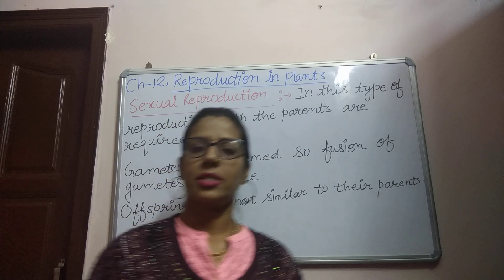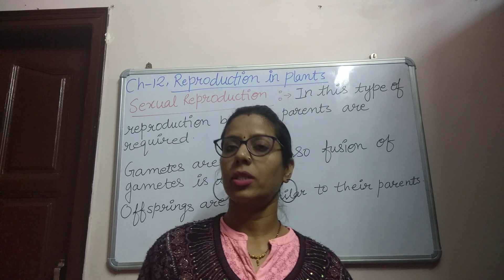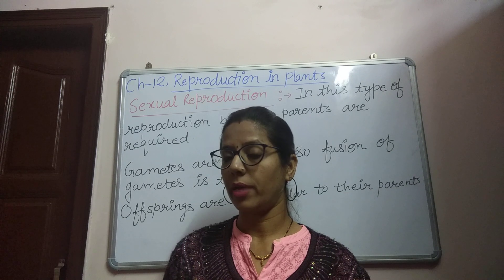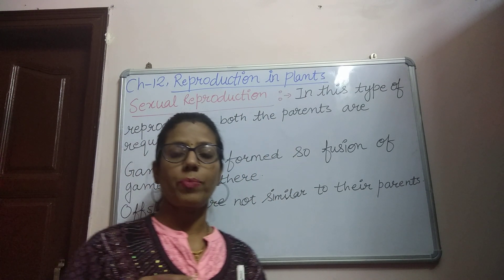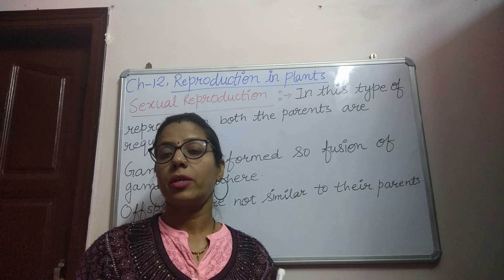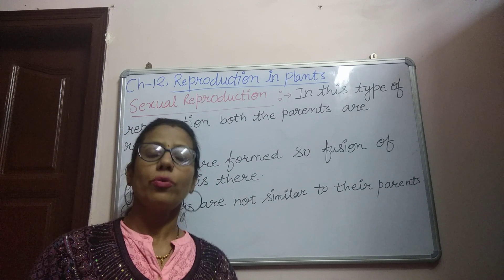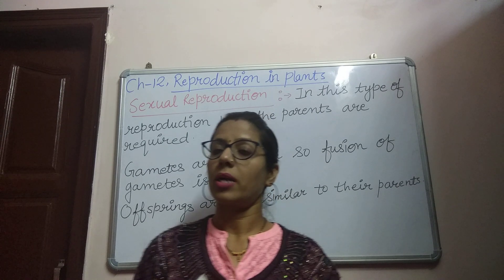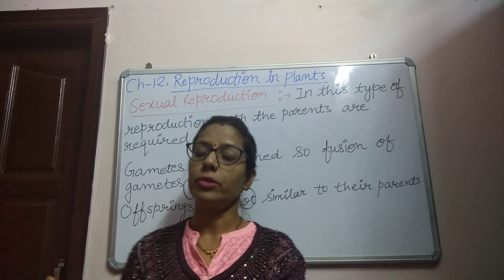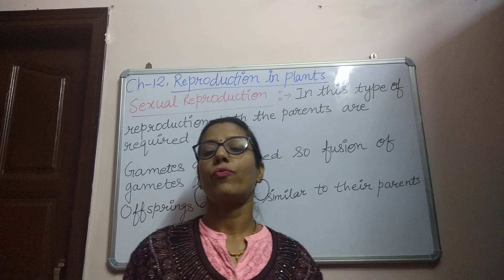In this chapter, we are discussing reproduction in plants. In sexual reproduction, male and female gametes are produced in the flower. They may be produced in the same flower, or in different flowers on the same plant, or in different plants. The reproductive part of a plant is the flower. The vegetative parts are root, stem, and leaves, but the reproductive part of a plant is the flower. Now we will discuss the structure of a flower.